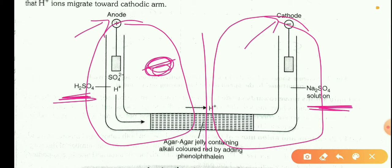A dilute H2SO4 is taken in this anodic arm and Na2SO4 was taken in this cathode arm. Now passing current.